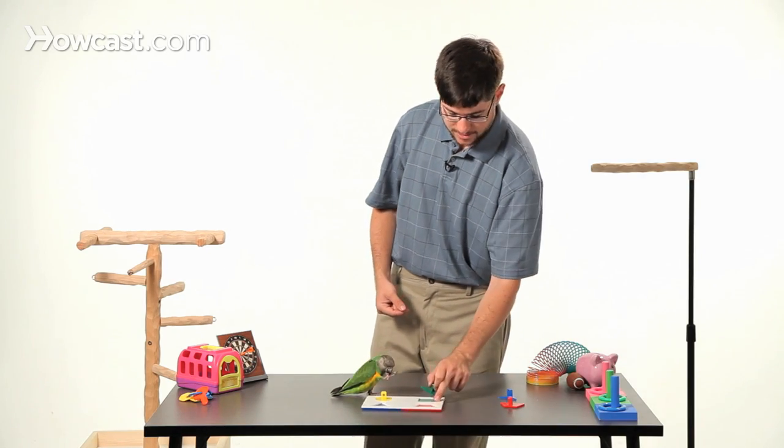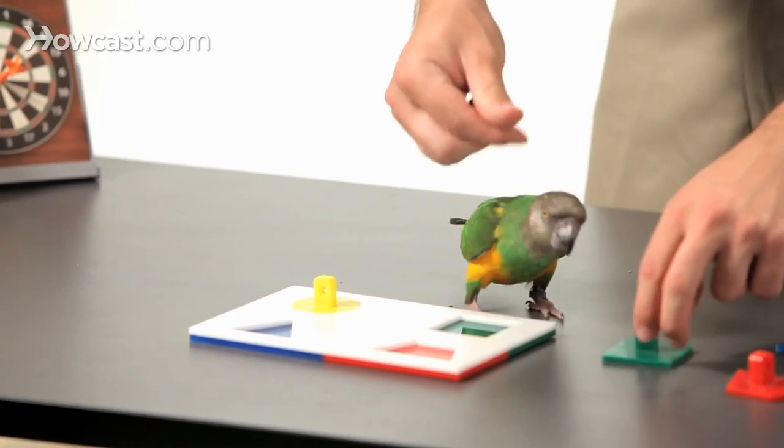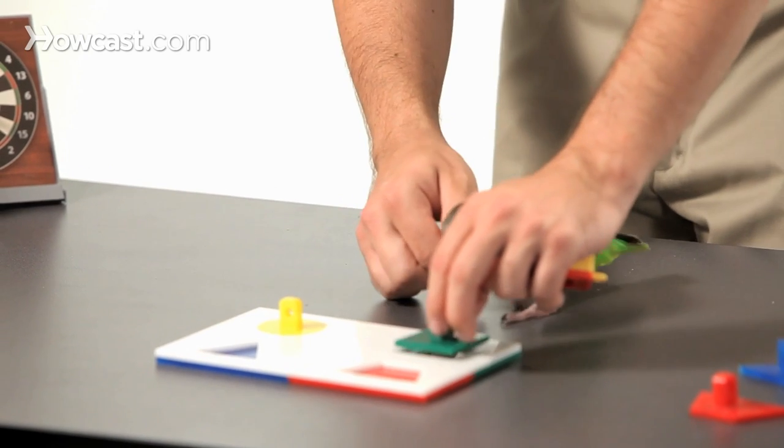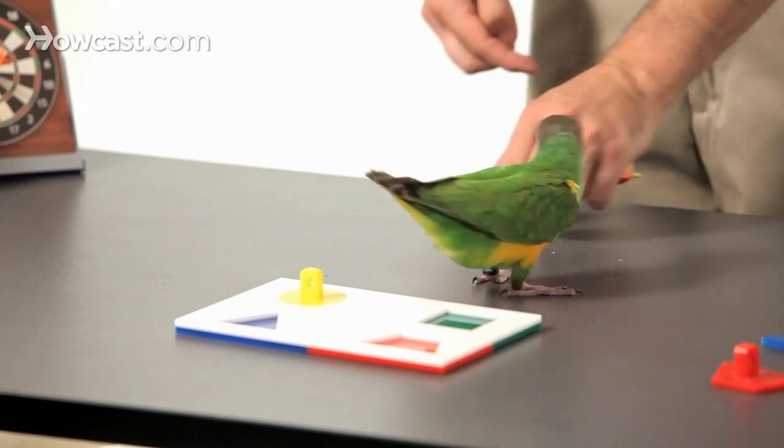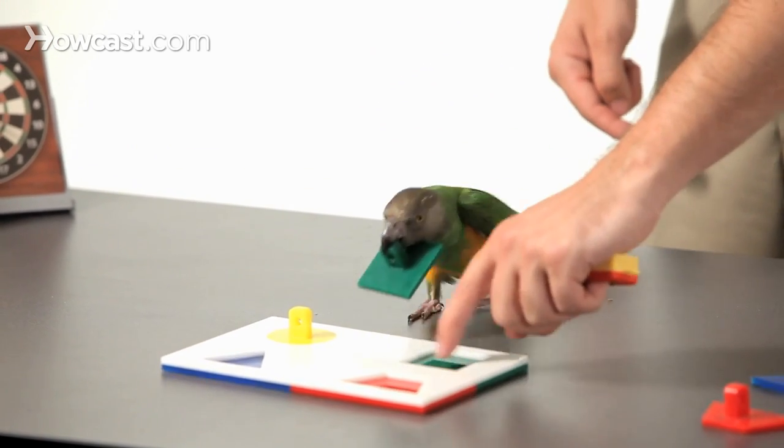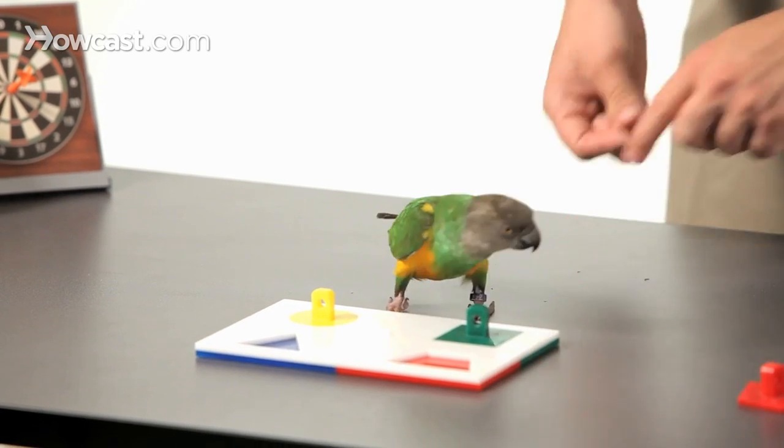The second piece you're going to want to teach is the square and this one's tougher, but it can go in in multiple ways. It can go in this way and it can go in this way. It can't go in under 45 degrees, so the bird needs to learn to turn the piece to put it in. You're going to tap on the square because they already know how to do the circle and teach them to put the square in. Good bird.